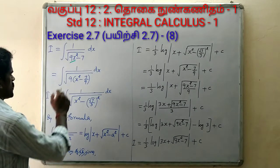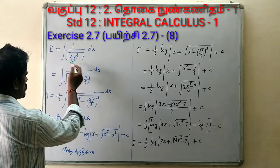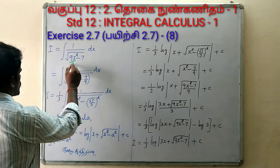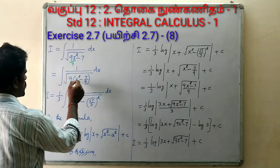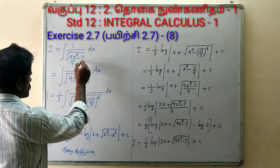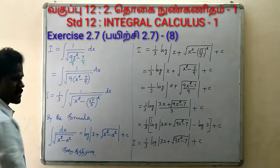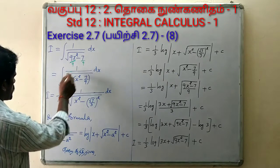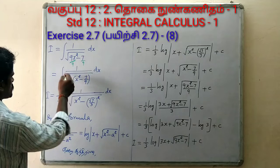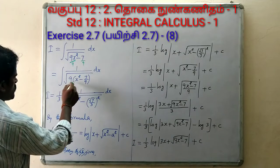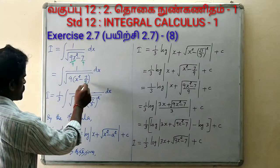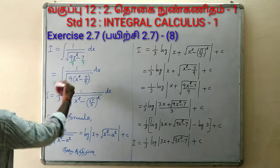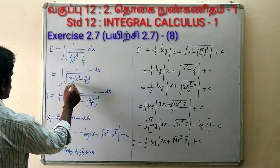If we divide inside by 9, then 100 divided by 9 gives us x². So x² becomes equal to 7 by 9. Therefore I equals the integral of 1 by square root of 9 times (x² minus 7 by 9) dx. With 9 factored out from the square root.